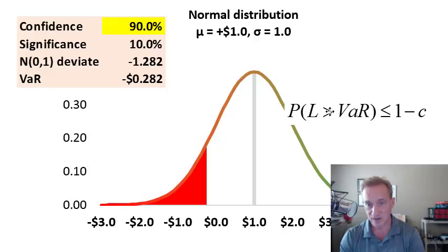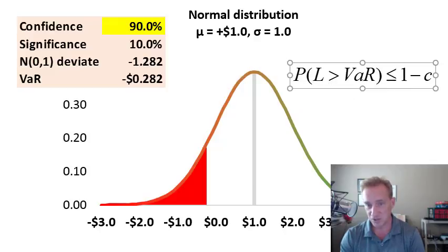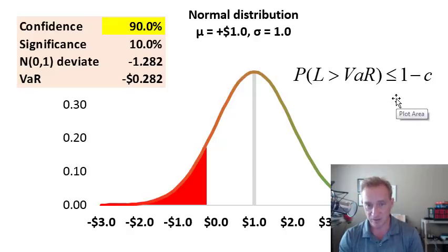And so hopefully that's enough for us to recognize what can be challenging notation if we don't comprehend the idea. But here, for example, is Jorian's expression for VAR. The probability that the loss will exceed the VAR level, which is a quantile, a value here on the x-axis, is less than or equal to, in other words at most, 1 minus the confidence level. In this case, the probability that the loss will exceed $0.28 is, at most, 10%.